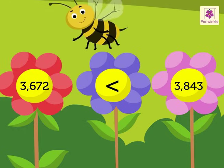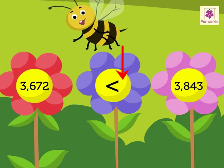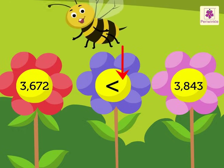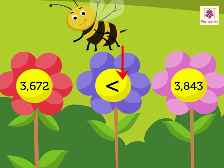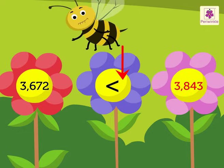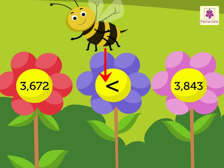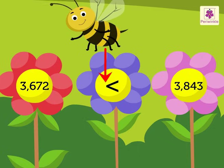You already know, the open side of the sign always points towards the greater number. The closed side of the sign always points towards the smaller number.